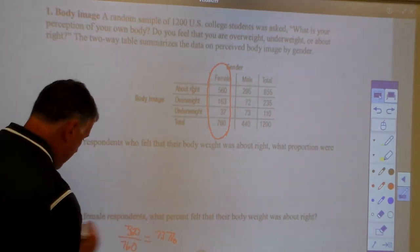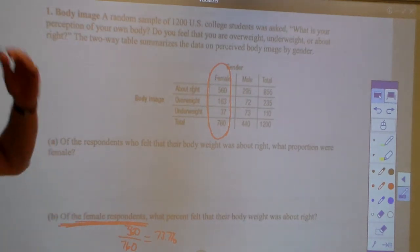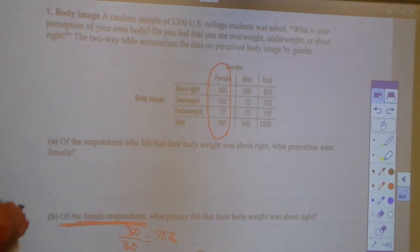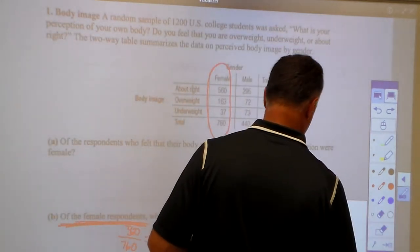73.7%. That's how you find it. They're saying of the females, just the females, that's it. They're only looking at females. So when they say that, they're looking at a conditional probability, which again, we're going to talk about in a second.